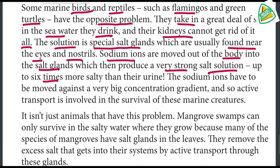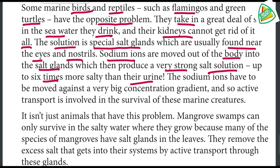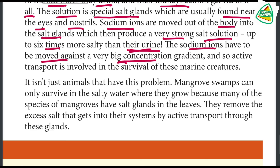The salt glands produce a solution up to six times more concentrated than their urine. The salt is moved against a very large concentration gradient using active transport, from low concentration inside the body to high concentration in the salt gland secretion.